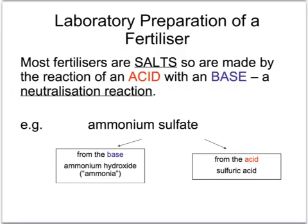The majority of fertilisers are salts, which are made when an acid is reacted with a base — or a soluble base called an alkali — in the right proportions. This is a neutralisation reaction.